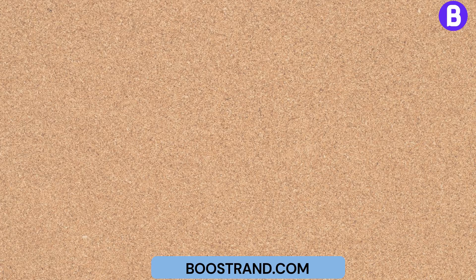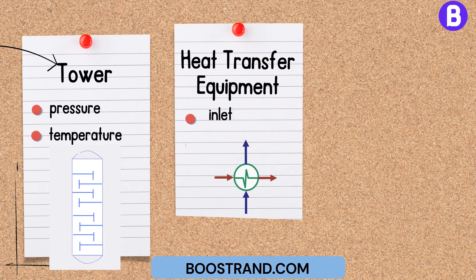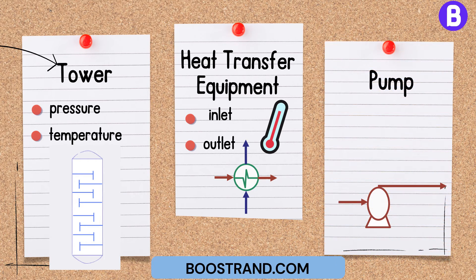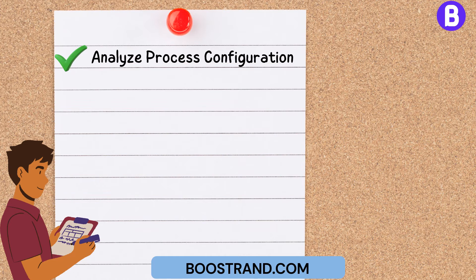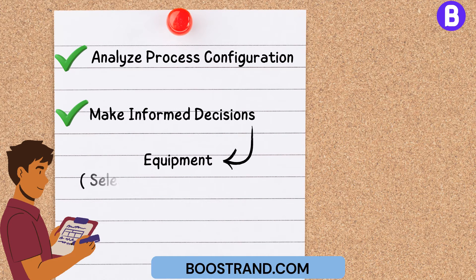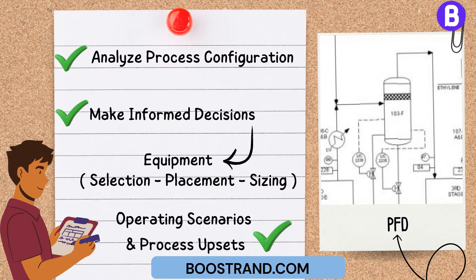For example, if we are dealing with a tower, a PFD typically shows the operating pressure and temperature of the top and bottom sections. For heat transfer equipment, we show the inlet and outlet temperatures, and for a pump, we sometimes show the volumetric flow rate. This visual representation allows engineers to analyze the overall process configuration and make informed decisions regarding equipment selection, placement, and sizing, as well as evaluate expected operating scenarios and process upsets.